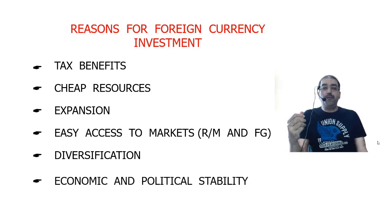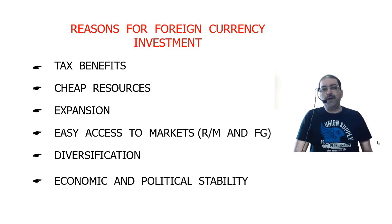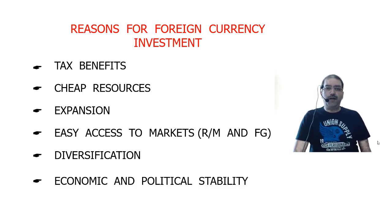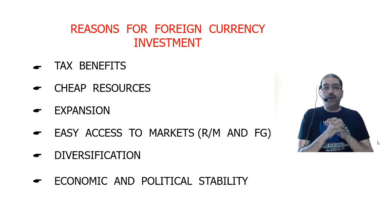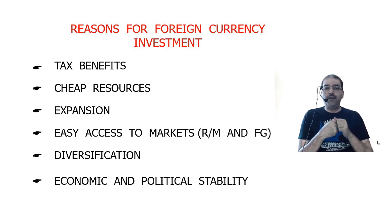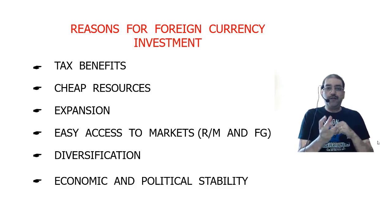Before the Modi government came into power in 2014, India used to have a coalition of many parties where no single party had dominance. Administration was difficult because each party would threaten the Prime Minister, saying 'if you don't do it my way, I will break from the alliance.' Political stability was not there for a very long time.